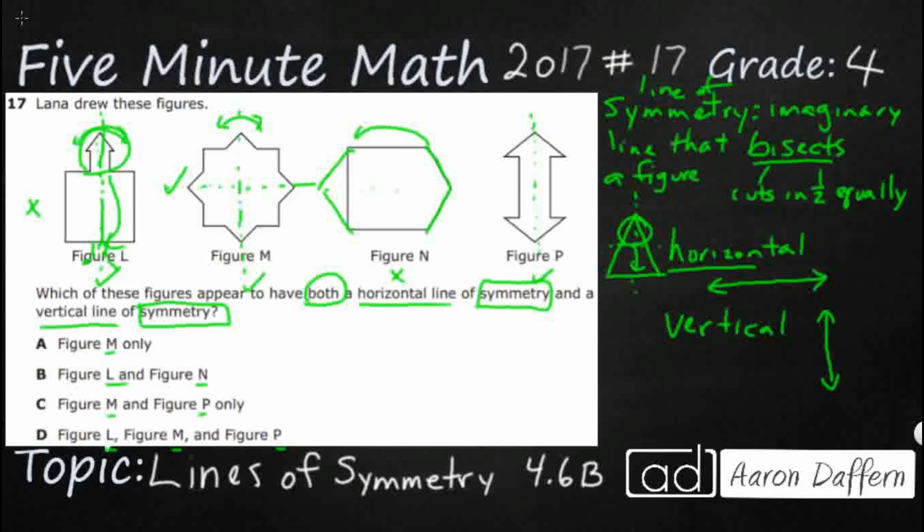N does have a horizontal line of symmetry. You can fold this top to bottom, and you'd be fine. But the problem is it needs to have both vertical and horizontal. And then P, yeah, it is kind of strange, but definitely. You can take this part right here and fold it over, and it would match up perfectly with that bottom part right here.